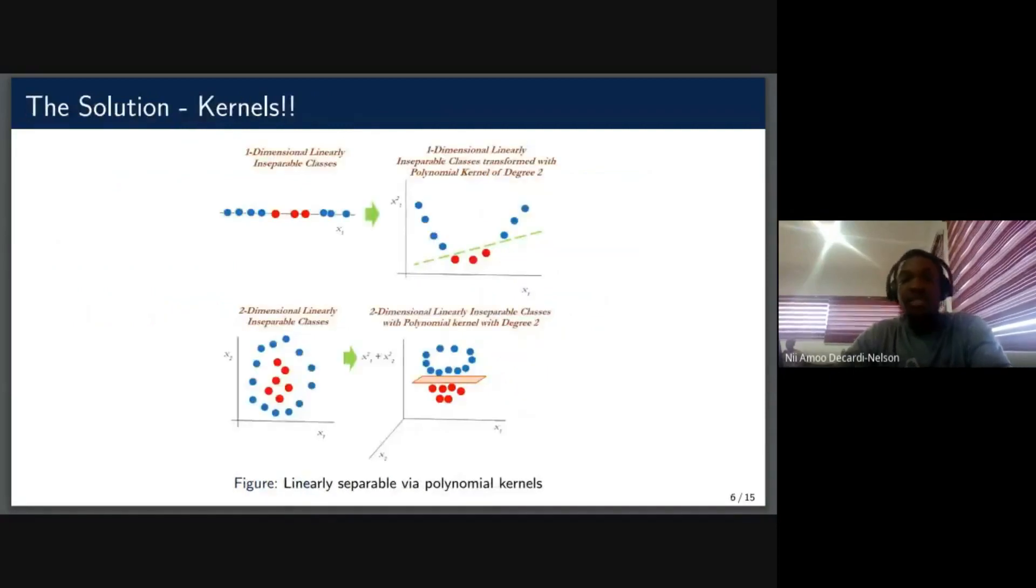Now what's the solution to that? To handle situations like that, we use kernels. A kernel is simply a transformation of the data using a feature map from one dimension to another dimension. And using such kernels, you'd be able to transform the data such that you'd still be able to use a support vector machine to separate the two classes using a linear classifier.